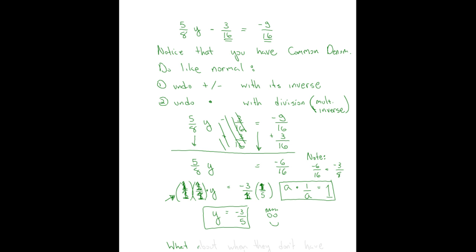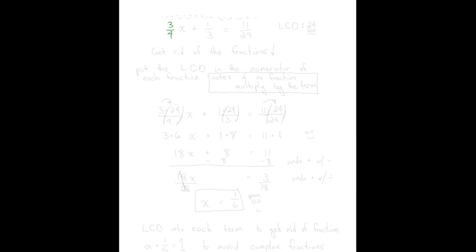Now what about when they don't have common denominators? Let's take three-fourths x plus one-third equals eleven twenty-fourths. There isn't a common denominator among the terms — they're all very different. But the least common denominator is twenty-four, because four times six is twenty-four and three times eight is twenty-four.